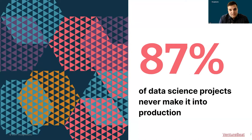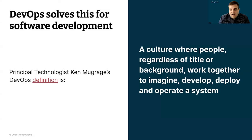Maybe to characterize this a little bit, we can start with a definition. I really like Ken Mugrage — he's a principal technologist with ThoughtWorks — and his definition of DevOps is that it's a culture where people, regardless of title or background, work together to imagine, develop, deploy, and operate a system.